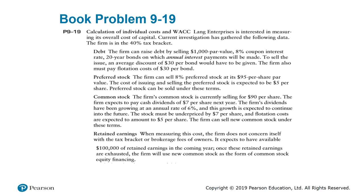For retained earnings, I use the same data but instead of calculating over net proceeds, I use the price as is: dividend of $7 over the $90 selling price plus growth rate of 6%. The firm expects to have $100,000 of retained earnings available in the coming year. Once retained earnings are exhausted, the firm will use new common stock as the form of equity financing. I calculate both the cost of new common stock and the cost of retained earnings.